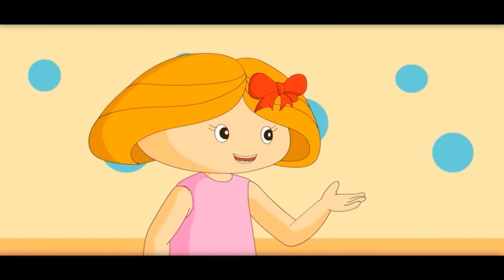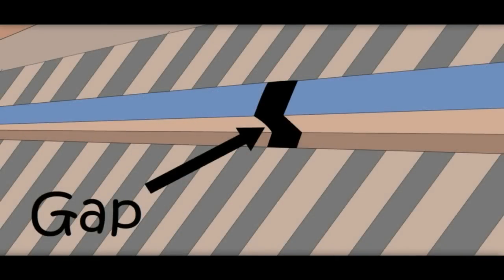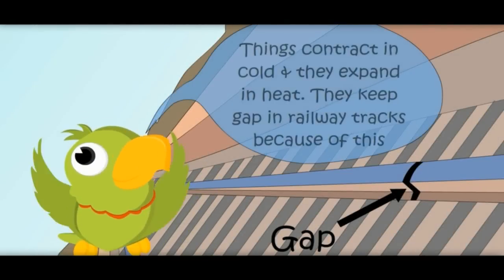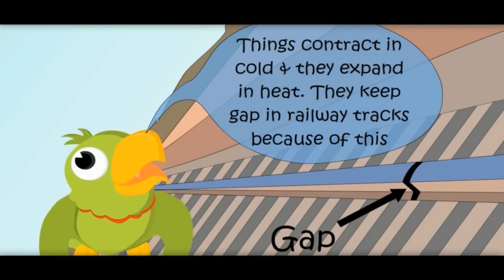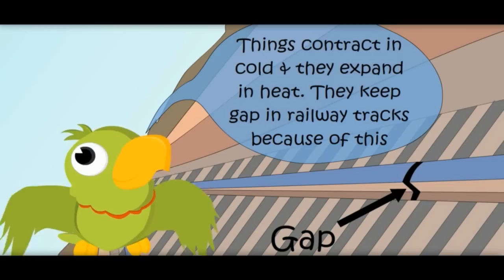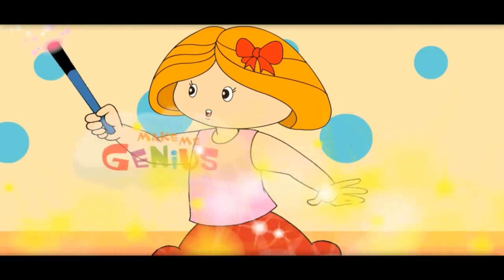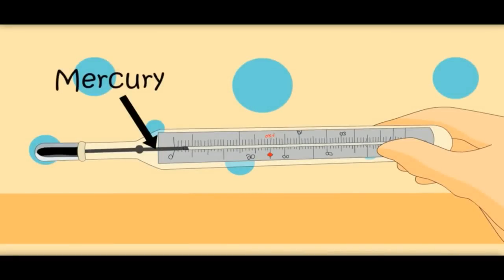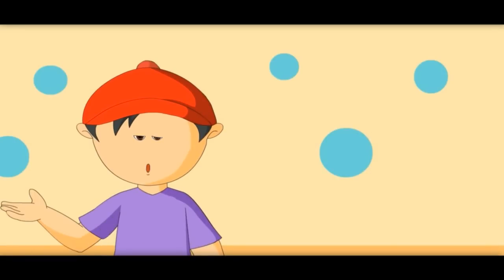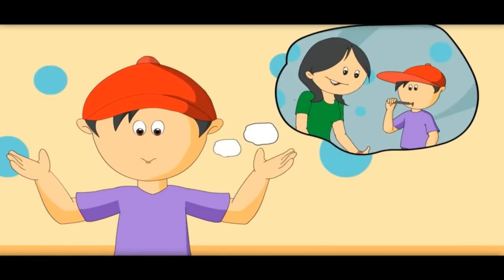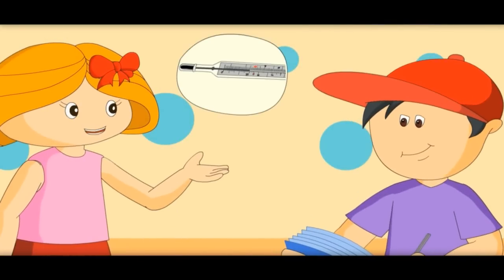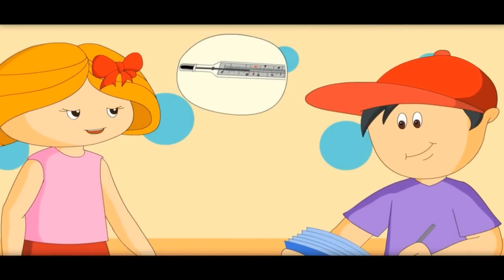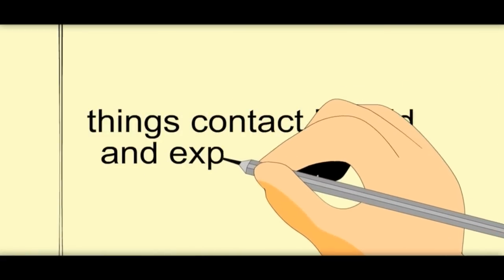That is why they keep a gap in railway tracks — because of expansion. I want to show one instrument for measuring temperature. What is inside this tube? It is mercury, a liquid which expands and contracts very fast. That is why it is used to measure body temperature. If your body is cold, the mercury would contract; if it is hot, mercury would expand. In this way, we can measure temperature.